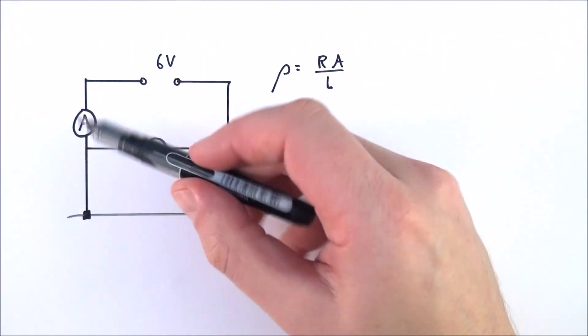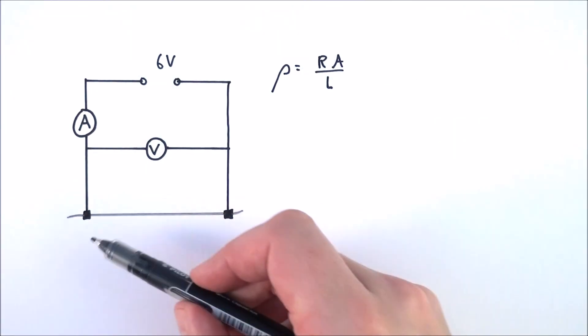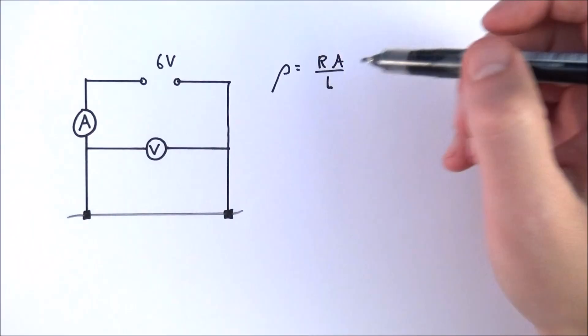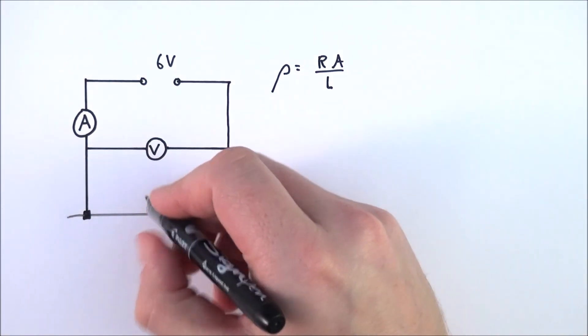We're going to be using the ammeter and the voltmeter to calculate our resistance. We're going to be measuring the length of the wire using a meter ruler to find out the length. To find out the cross-sectional area of that wire, you need to measure the diameter.